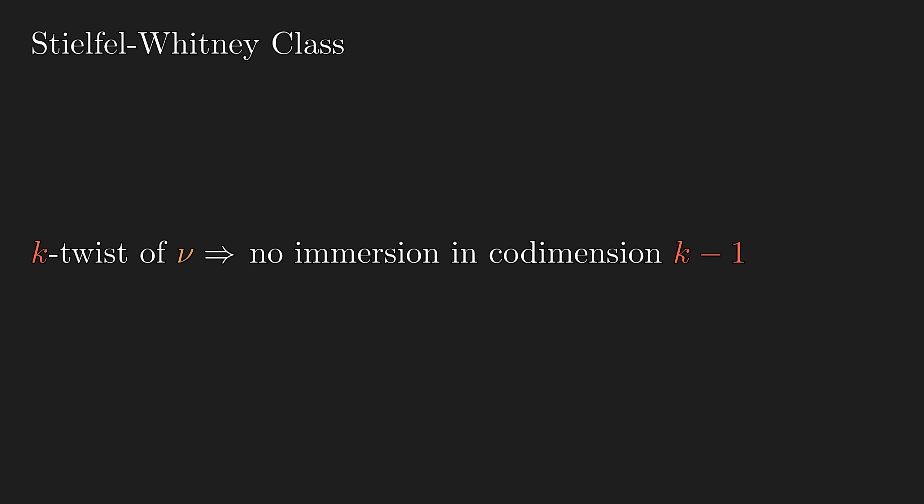Fortunately, there is a weaker, easier-to-compute algebraic invariant that partially captures it, called the Stiefel-Whitney classes. If w equals 1, a twist must exist. But if w is 0, a twist may still exist, but it's not strong enough to capture that information.